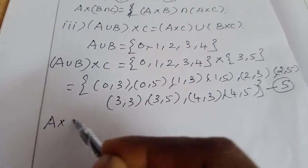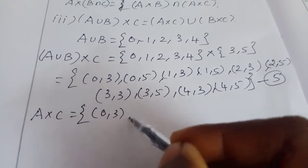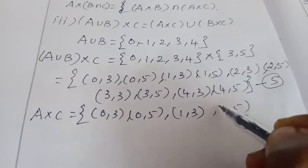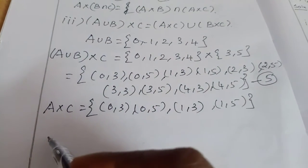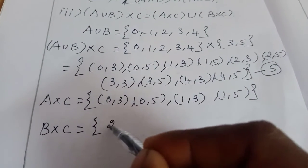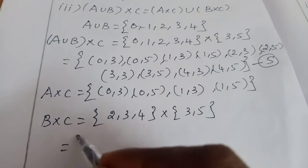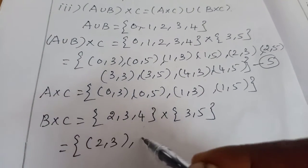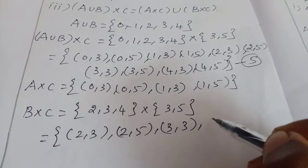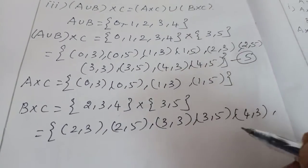So (A∪B)×C = {(0,3),(0,5),(1,3),(1,5),(2,3),(2,5),(3,3),(3,5),(4,3),(4,5)}. This is equation number 5. Next, A×C = {(0,3),(0,5),(1,3),(1,5)} and B×C, where B = {2,3,4} and C = {3,5}, gives {(2,3),(2,5),(3,3),(3,5),(4,3),(4,5)}.